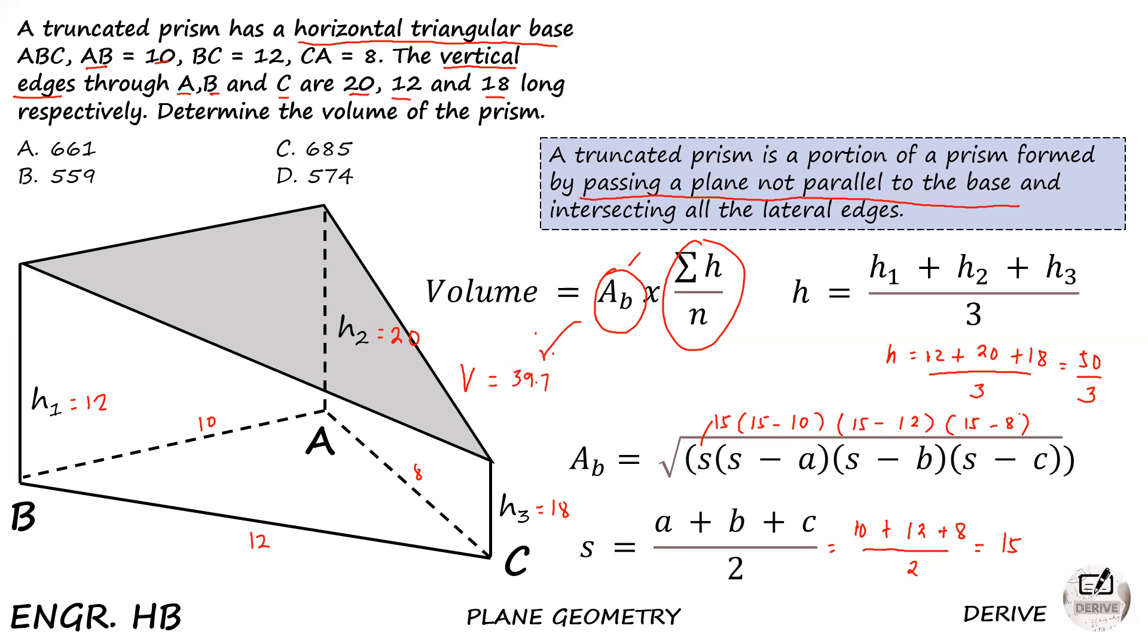The volume equals the area of the base times the summation of height over N, or the average of the three vertical edges. That's 39.7 times 50 over 3, and the answer is 661.44 units. Looking at the choices, we have 661 in letter A.